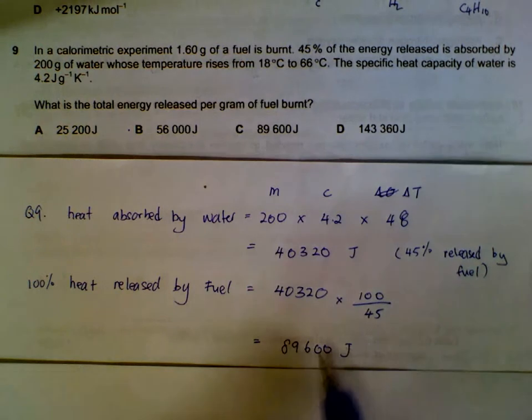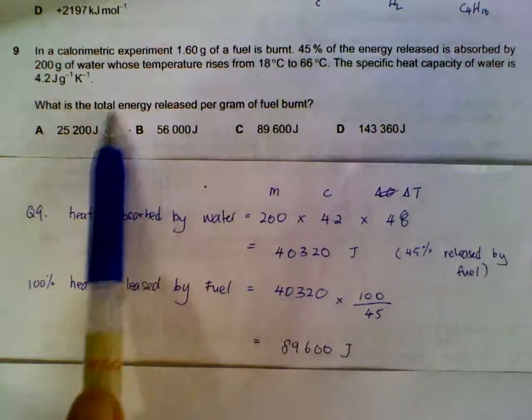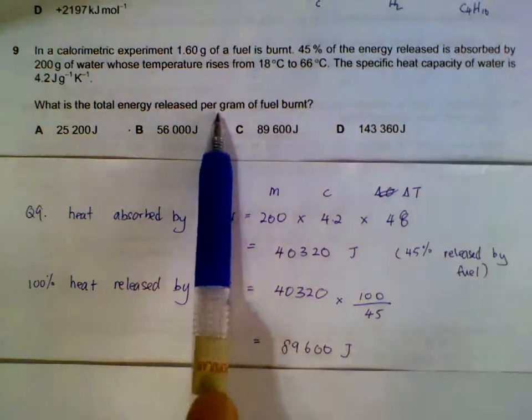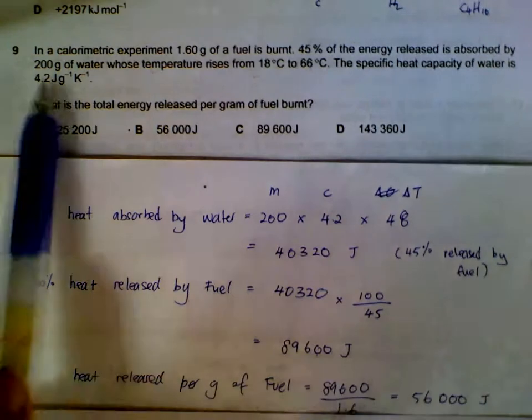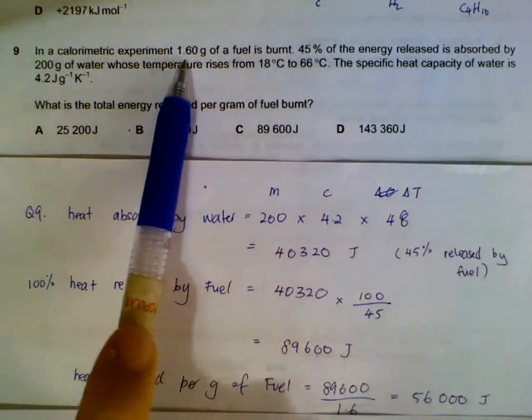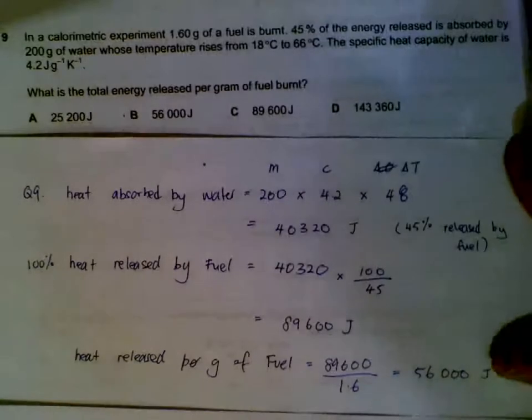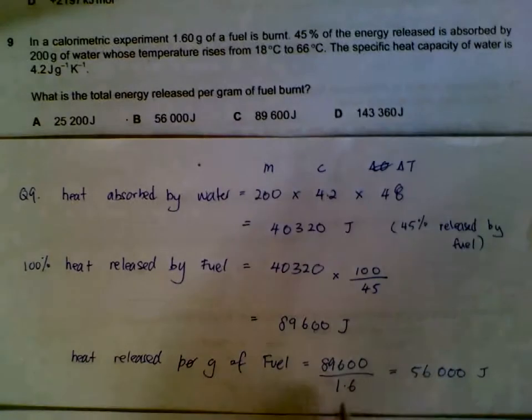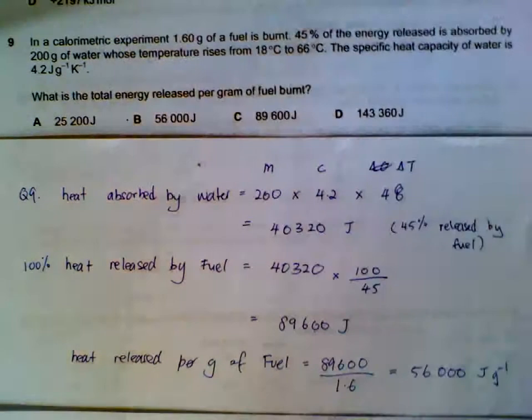Since this is the total released by the fuel, they want energy released per gram of fuel. So you take this total divided by the 1.6 grams that we used. This is the energy in joules per gram of fuel.